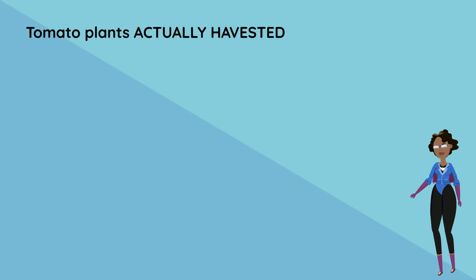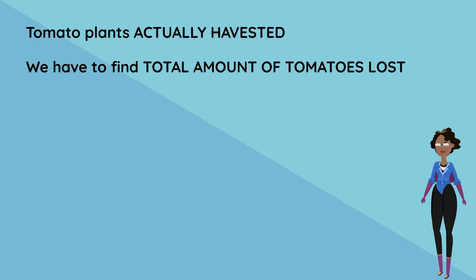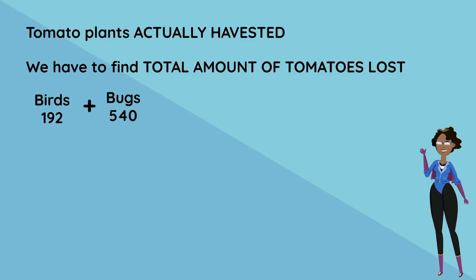In order to figure out tomato plants actually harvested, we have to find the total amount of tomatoes that Fred lost. That means we have to add the amount the birds ate and the amount the bugs destroyed and then take it away from the total tomatoes grown.